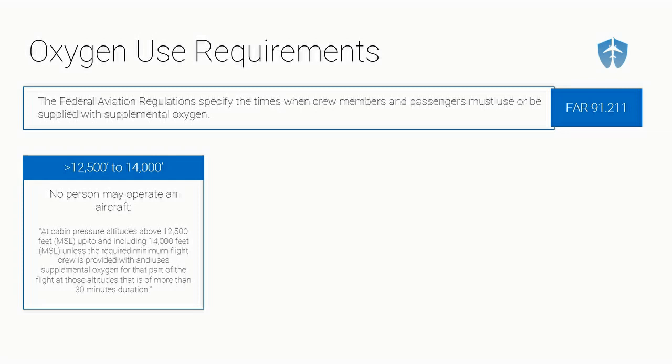That requirement applies for that part of the flight of more than 30 minutes duration. For example, if you're flying at 13,000 feet for 60 minutes, you as the pilot would have to use oxygen for the second 30 minutes of that flight. If you were up there for 90 minutes, you'd have to use oxygen for 60 minutes. So for the first 30 minutes above 12,500 but below 14,000 feet, you don't have to use oxygen — but anything past 30 minutes, you do.